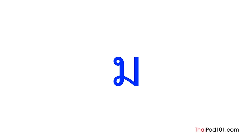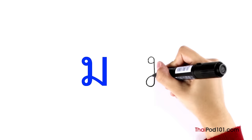Now it's time to take out your pencils — we're going to practice writing. Find some paper and follow along. Start with the head, go down and make a loop, go to the right, and then back up. See how easy that was?